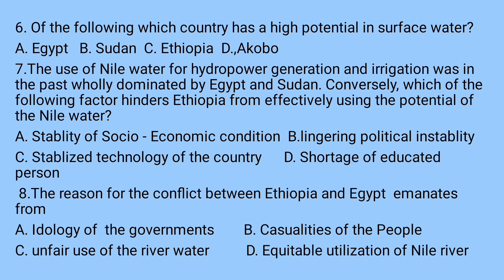Question number eight: The reason for the conflict between Ethiopia and Egypt emanates from — a) ideology of the governments, b) casualties of the people, c) unfair use of the river water, d) equitable utilization of the Nile River.